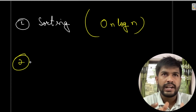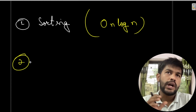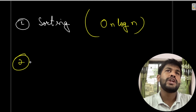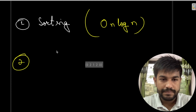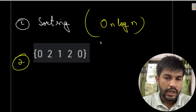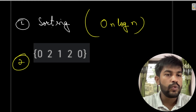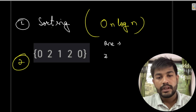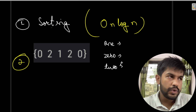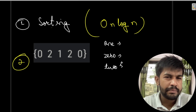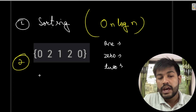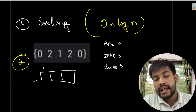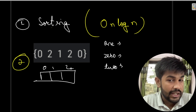The next approach is a counting sort kind of algorithm. Since the numbers are quite limited and feasible, we can use counting sort. What this means is we can have a counter for all three values: zero, one, and two. You can use three variables, or since there are only three distinct numbers, you can use an array of size three where the indexes represent the values.